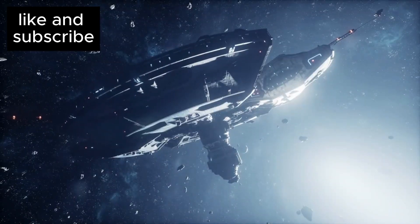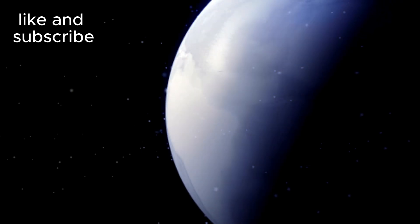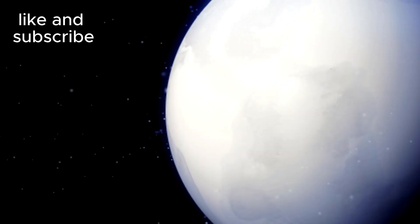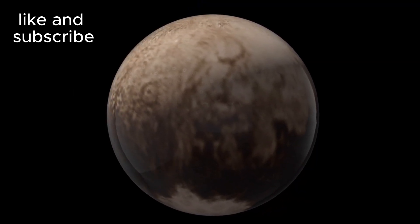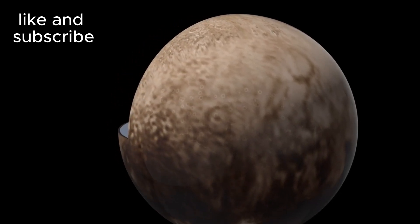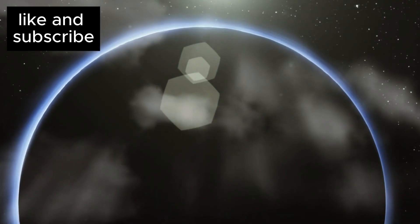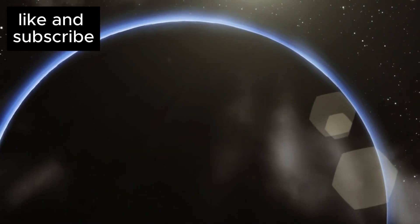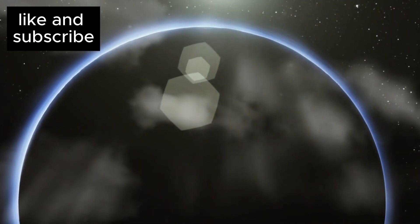For years, scientists believed Pluto formed gradually, accumulating ice and rock over millions of years. This slow process would have left Pluto cold and dormant. But recent studies suggest something entirely different: Pluto may have formed quickly and violently, with massive collisions generating enough heat to create a liquid ocean that could have been maintained ever since through radioactive decay.